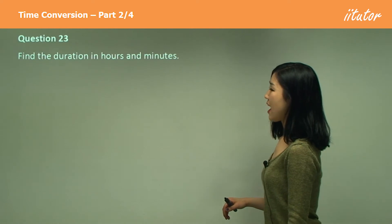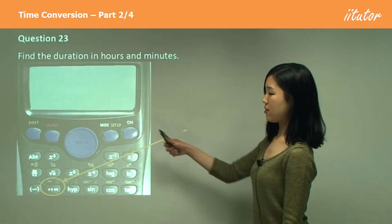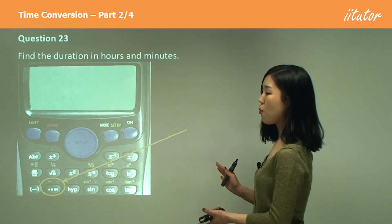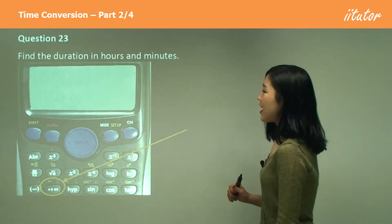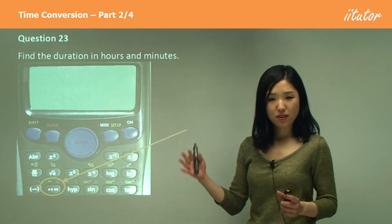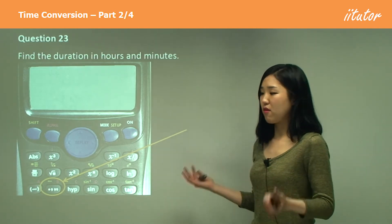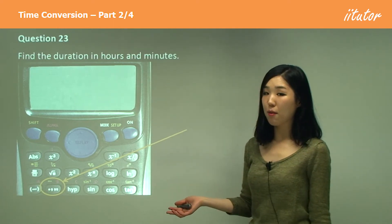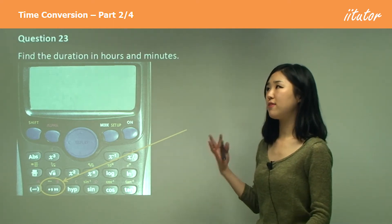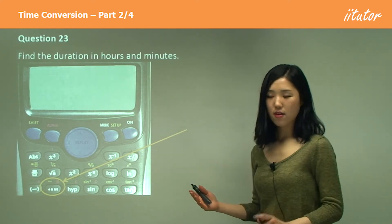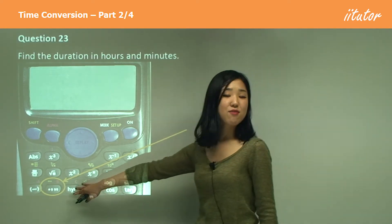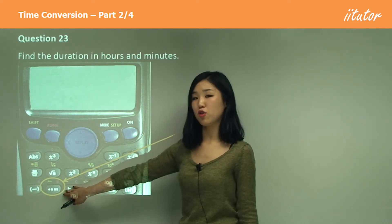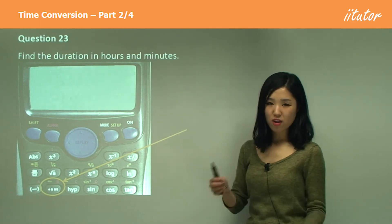Question 23 asks us to find the duration in hours and minutes. I'm going to show you a calculator method. Normally with your Casio calculator, when we calculate durations between two specific times — say from 2:15 a.m. to 3:15 a.m., or 3:46 a.m. — we want to calculate the time difference, and we can easily find the answer using a specific button on the calculator.